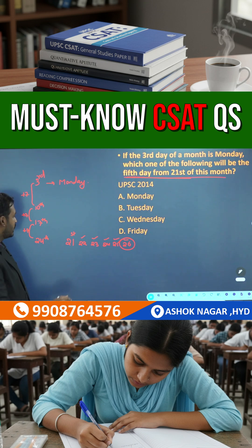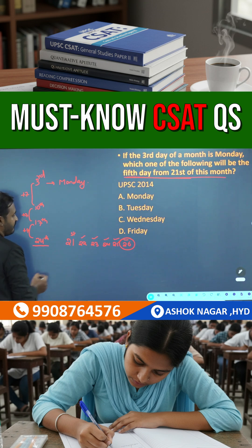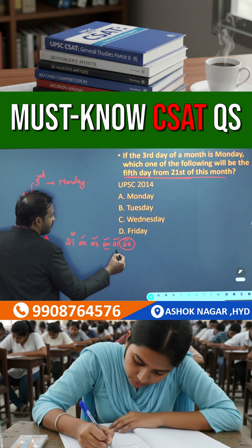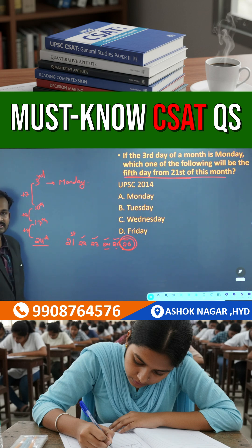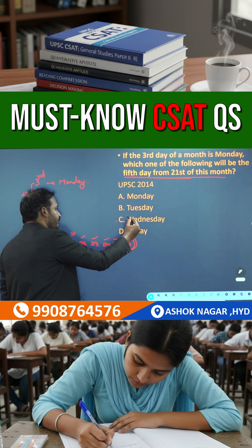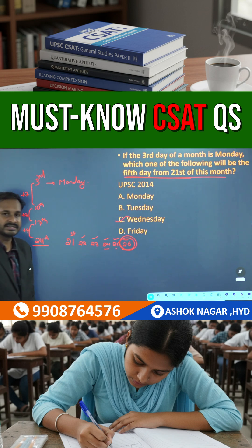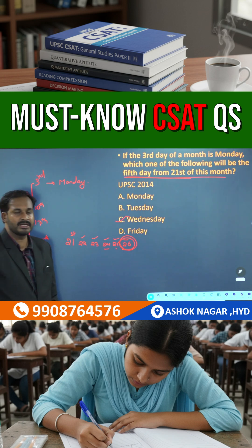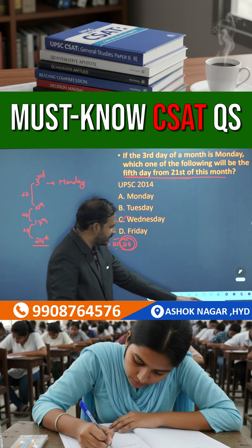So if the 24th is Monday according to the given question, then what will be the 26th? The 26th will be Wednesday. So our answer here becomes Wednesday — a simple question.